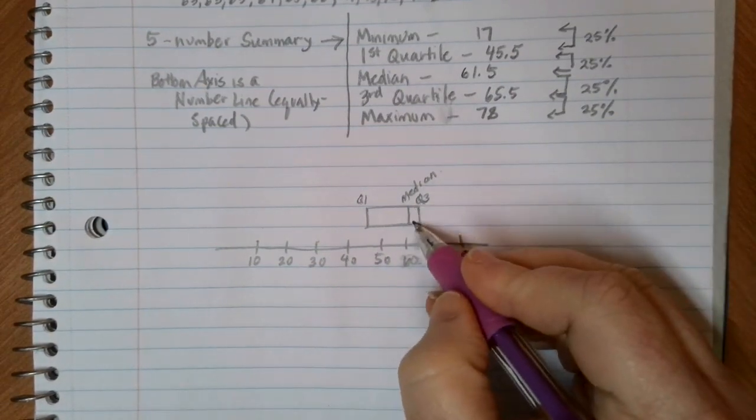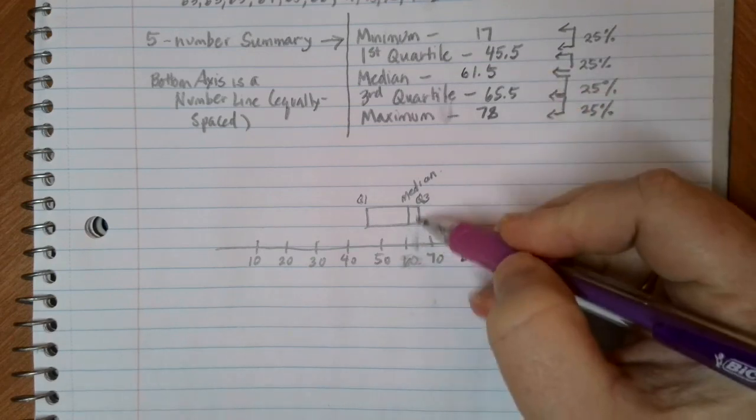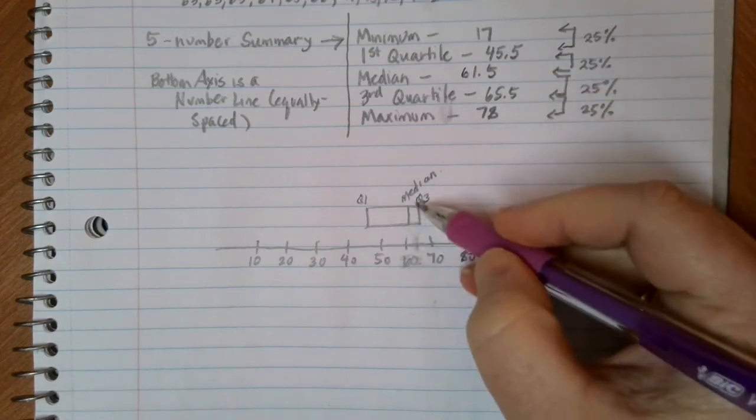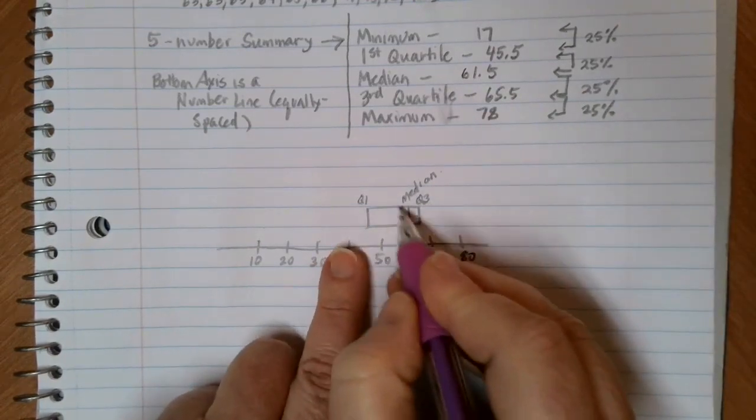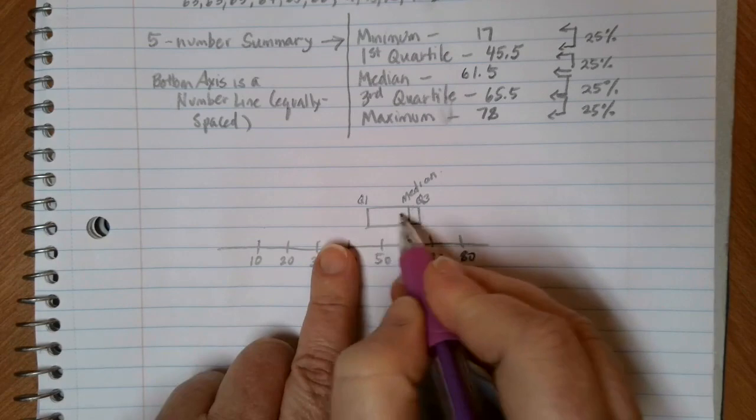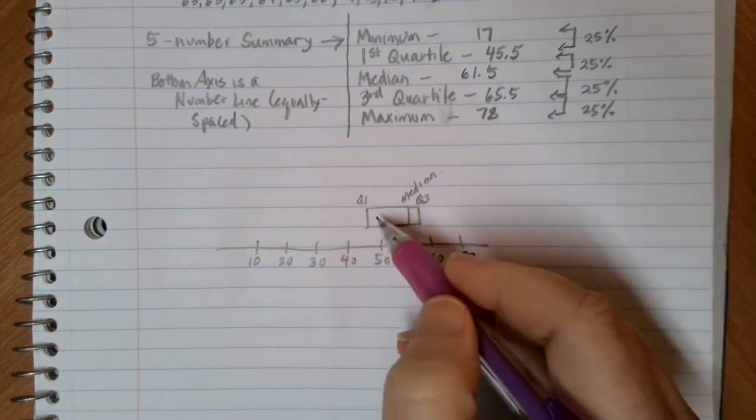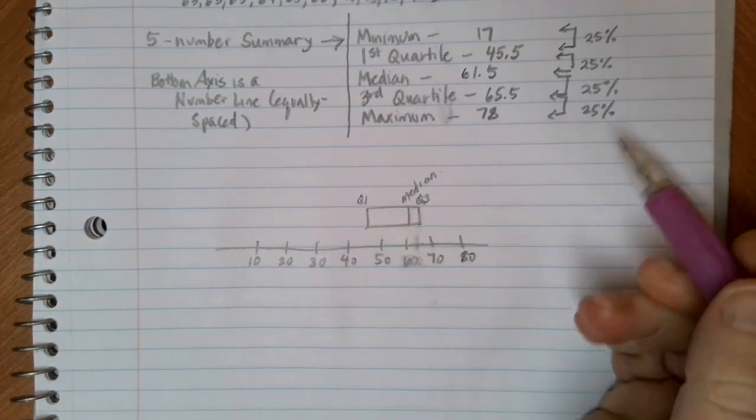Notice that we have a lot of data here between 61.5 and 65.5, right? And that makes sense because we had like three people that were 63. And then there's a little bit bigger spread here with that second 25%.